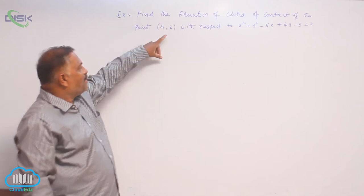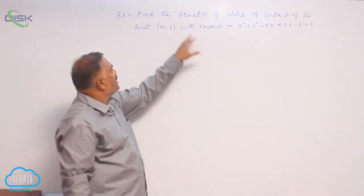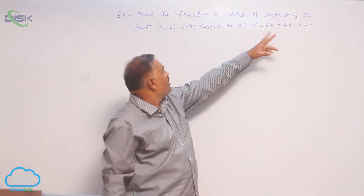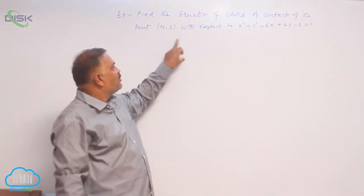Let us discuss a problem based on chord of contact. Find the equation of the chord of contact of the point (4, 2) with respect to the circle.